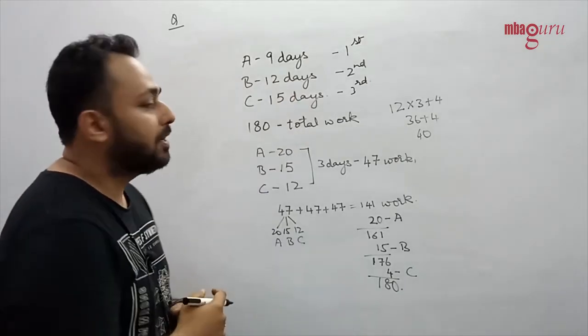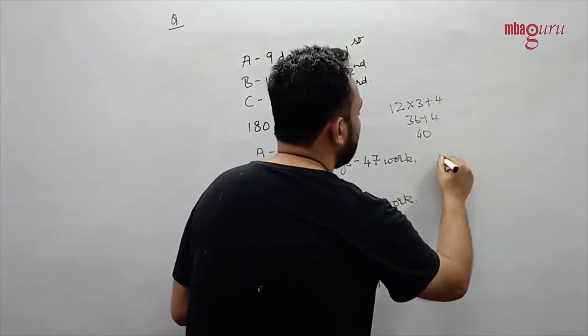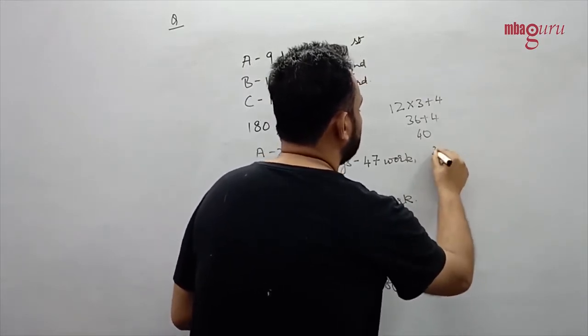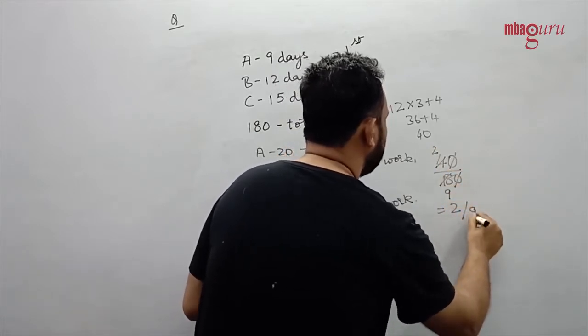Given that we have to identify the fraction of the work done by C, that answer is going to be 40 by 180 or 2 by 9.